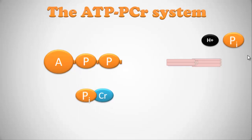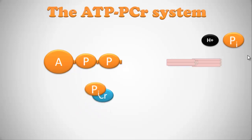Separate from that, inside our muscle we have a molecule called phosphocreatine. You've probably heard of creatine — it's the same creatine you supplement with. When you consume creatine, you can increase the amount inside your muscle, increasing the phosphocreatine pool. The ATP-PCR system works by detecting a buildup of ADP, then creatine kinase splits apart the phosphocreatine molecule, donating its inorganic phosphate to ADP to form ATP again.